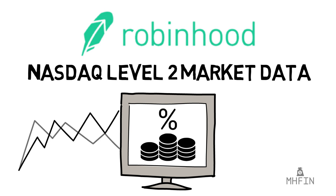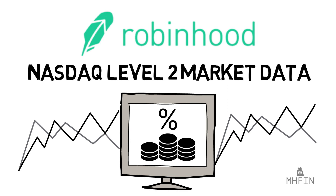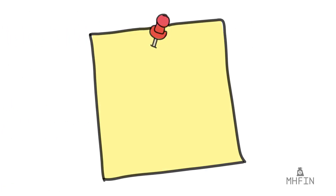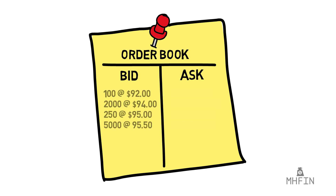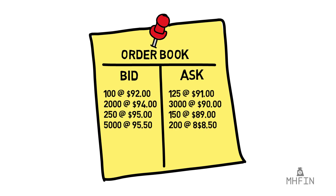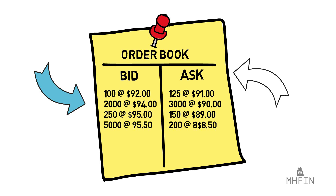Level 2 is essentially the order book for NASDAQ stocks. This just means that there is a list out there with all the open orders and their respective prices. By seeing all the bids, you can better gauge where the price is headed in the short term. Bids are like limit buy orders that other investors have opened on the market. Similarly, asks are like limit sell orders from other investors. Like any limit order, each bid and ask is represented by the price and quantity of the order.